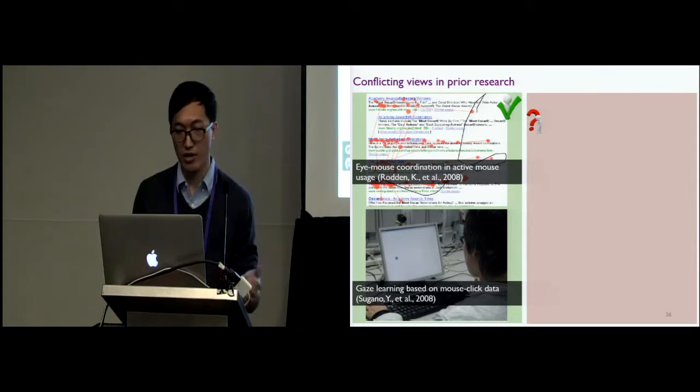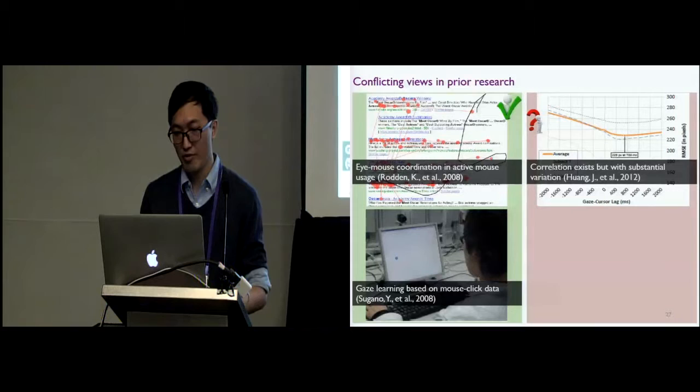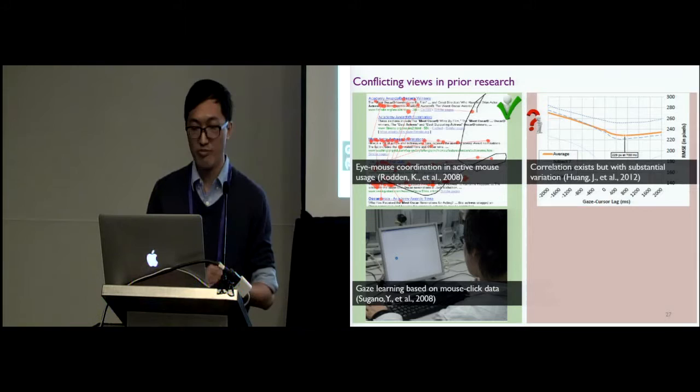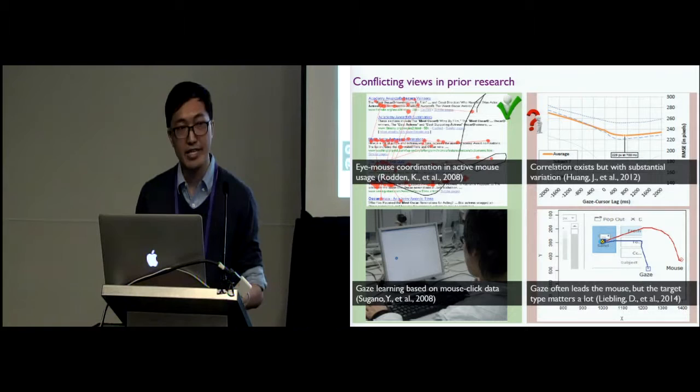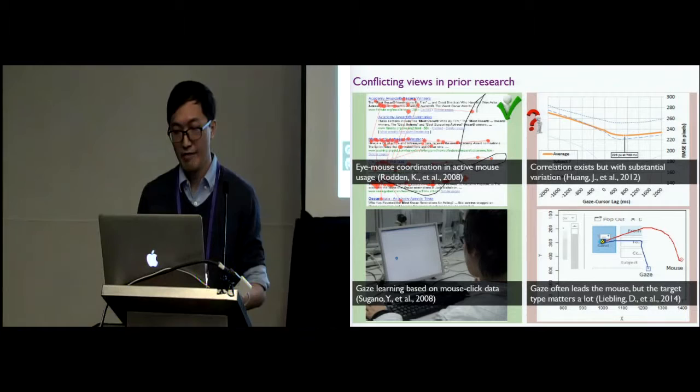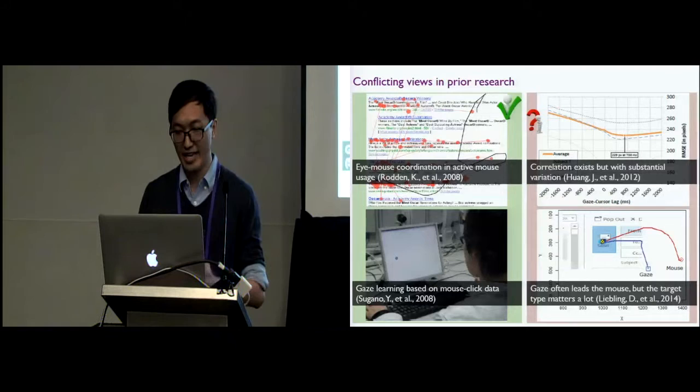On the minus side, Huang and his colleagues report that yes, there is a certain correlation between gaze and cursor, but substantial variation also exists, depending on the time spent on the page, personal browsing habit, and the current cursor behavior. Similarly, Liebling and his colleagues report that gaze does lead the mouse, but the gaze-mouse coordination is very complex in real-life scenarios. This suggests that if you want to make use of the interaction data to build an eye tracker, we need to understand when the mouse and the gaze, or the interaction and the gaze, are actually aligned spatially and temporally.